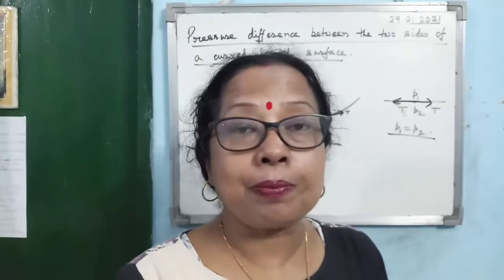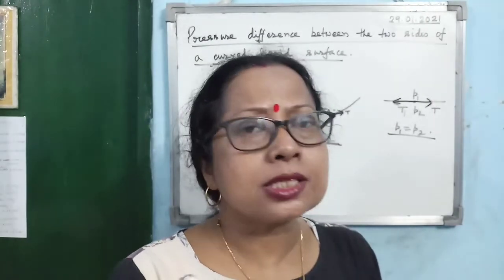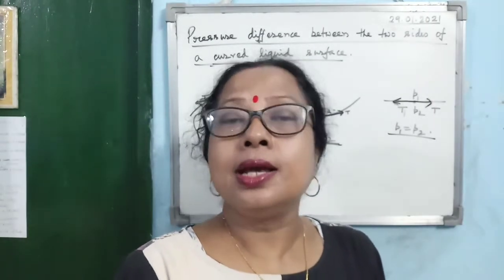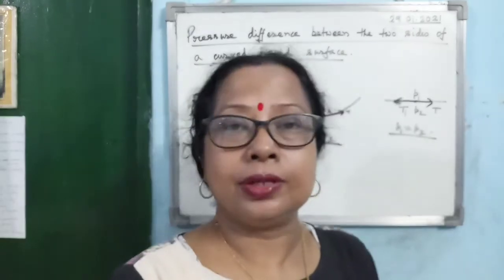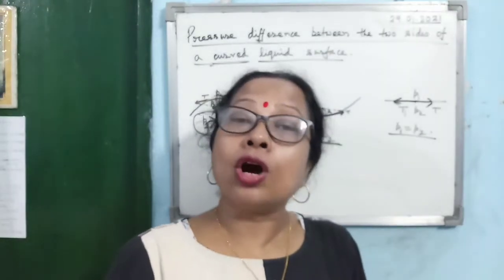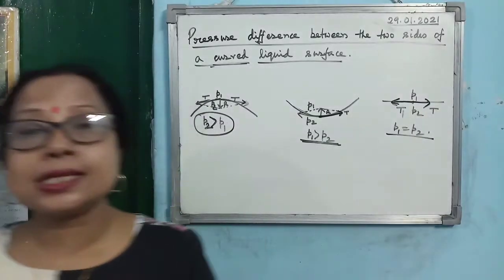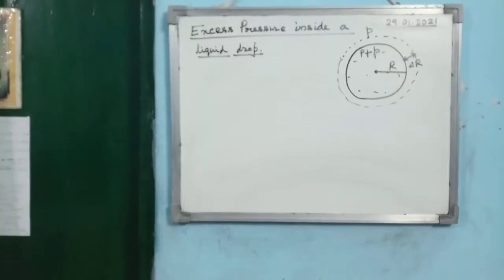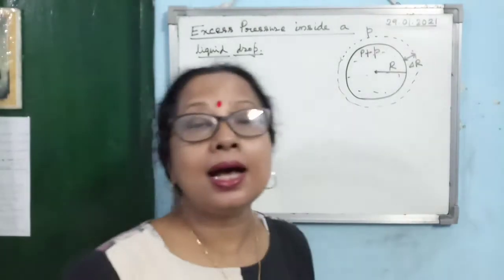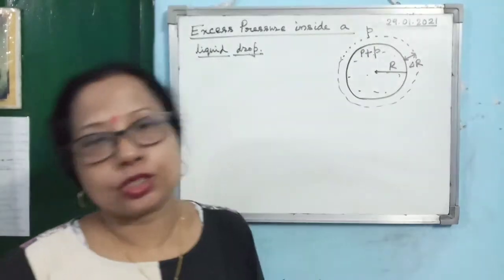This concept is very, very important — repeating it for emphasis: whenever the liquid meniscus is curved, an excess pressure acts on the concave side. Now we will find out what is the excess pressure inside a liquid drop.